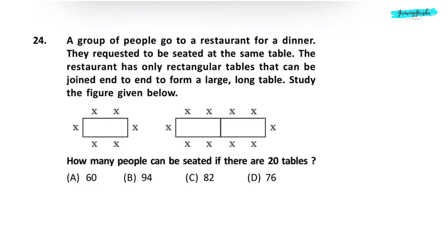Question 24. A group of people go to a restaurant for a dinner. They requested to be seated at the same table. The restaurant has only rectangular tables that can be joined end to end to form a large, long table. Study the figure given below. How many people can be seated if there are 20 tables? On the middle table, four people are sitting.